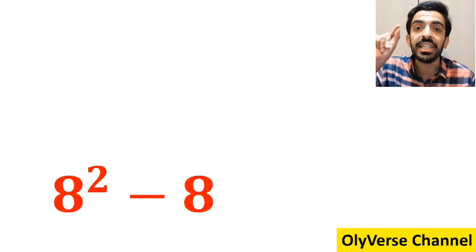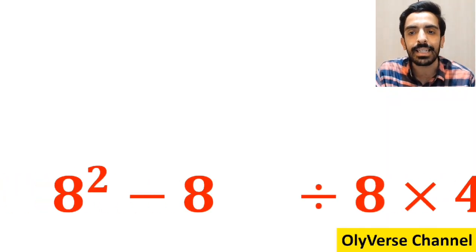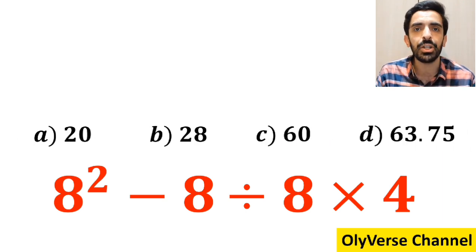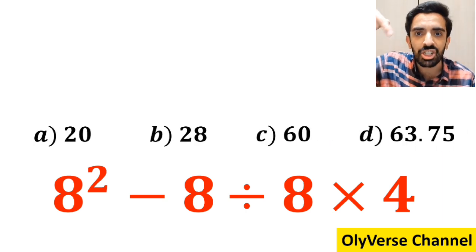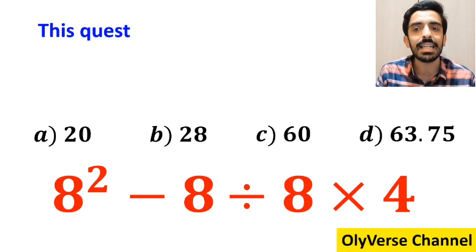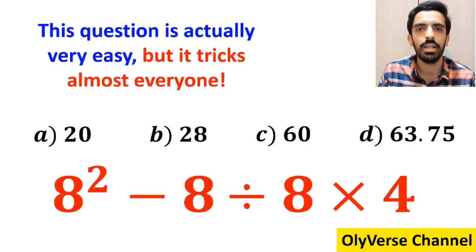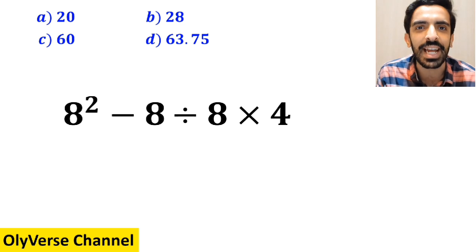What is the value of the expression 8 squared minus 8 divided by 8 then times 4? Which option do you think is the correct answer to this question? This expression is actually very easy but it tricks almost everyone. Let's break it down and solve it together.